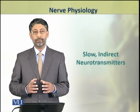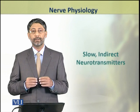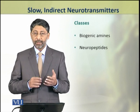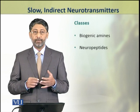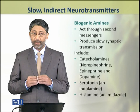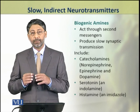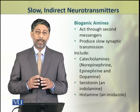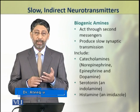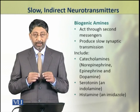In this module we shall discuss the neurotransmitters involved in slow and indirect transmission. There are two classes: biogenic amines and neuropeptides. Biogenic amines act indirectly through second messenger pathways and produce slow synaptic responses. They include catecholamines — epinephrine, norepinephrine, and dopamine — as well as serotonin and histamine.